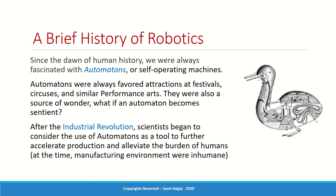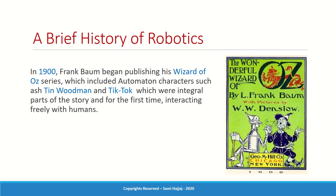That was the state of things until the early 1900s, when writer Frank Baum wrote his wonderful book The Wizard of Oz. This book introduced automaton characters that were part of the story — sentient beings interacting with the rest of the characters. The Tin Woodman and Tiktok were an integral part of the story, essentially robots socializing with the other characters. Back in the 1900s, that was very new — for the first time a machine was being considered as a sentient being.